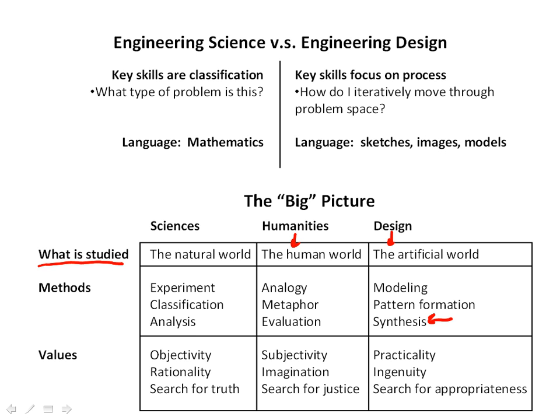Each of these fields of study has their own values. Scientists value objectivity, rationality, and are engaged in a search for truth. The humanities is much more subjective, with more opportunity to use imagination, and is concerned with justice and the human condition. Design — what we're studying in this class — values practicality, ingenuity, and a search for appropriateness: does the solution fit the problem, is it appropriate for what the customer wanted? Hopefully this gives you a good introduction to the differences between engineering science and engineering design, and we'll continue the series looking at the design process.